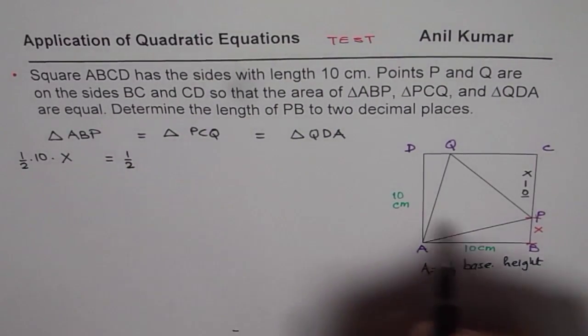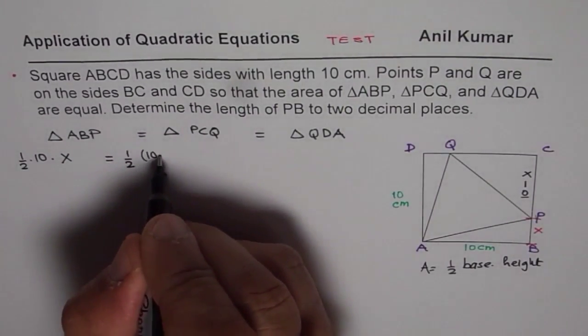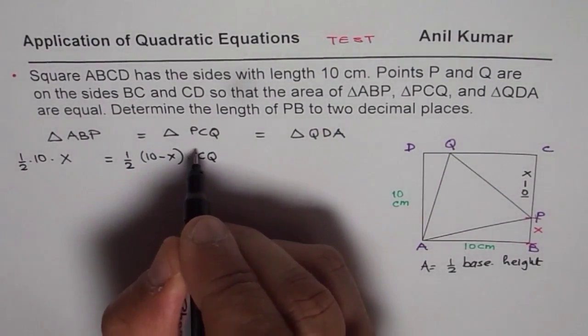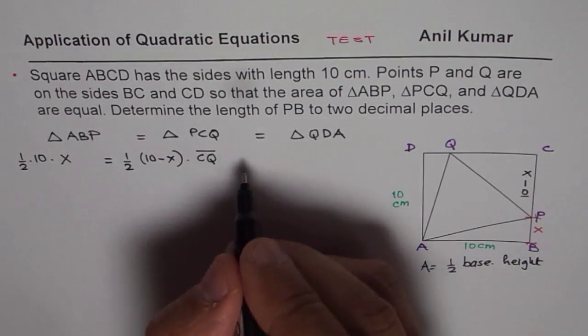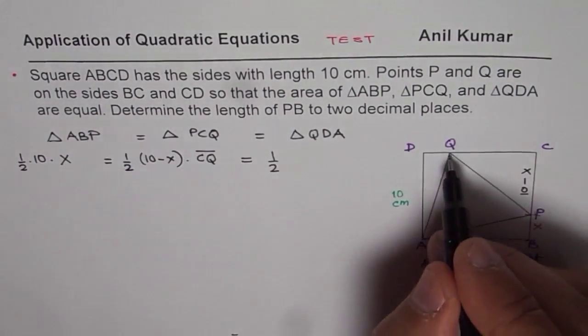So which is half, and in this case, the base will be 10 minus X, times height is CQ. Let's write CQ here, so CQ, is equal to area of triangle QDA, QDA.